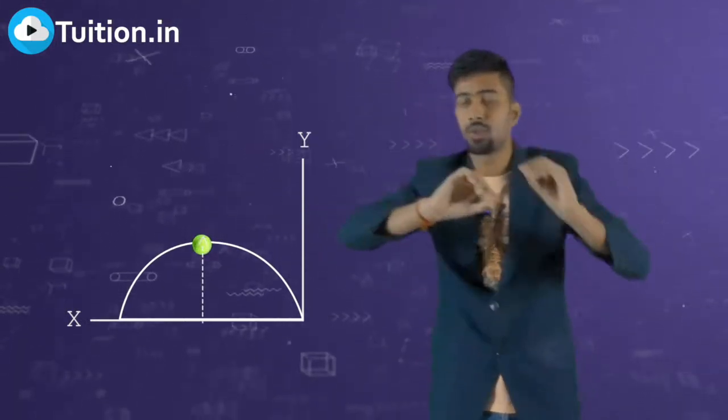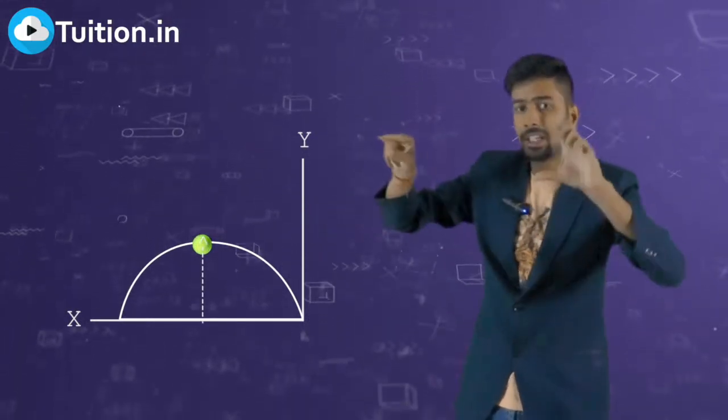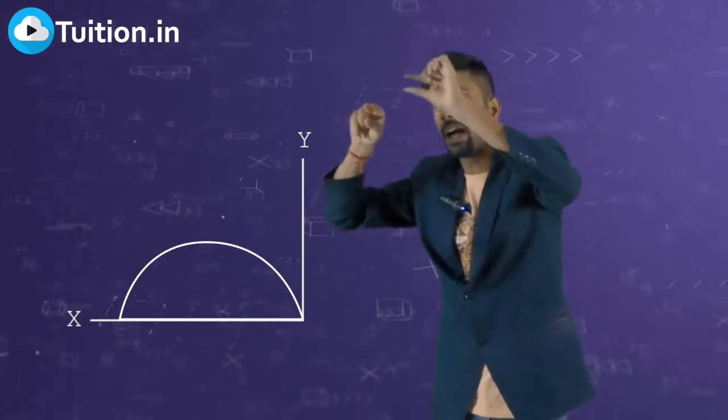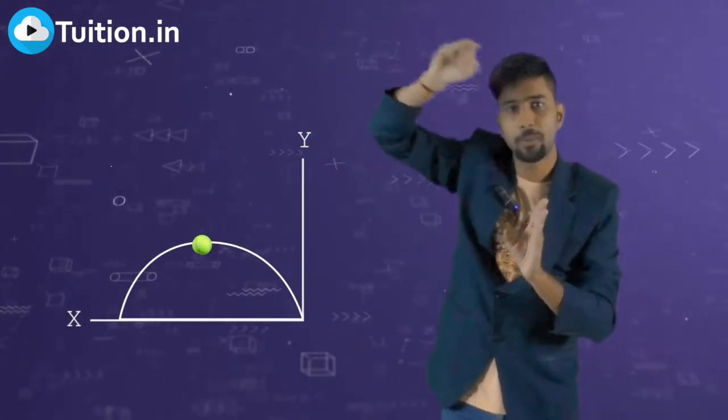But the X velocity has not changed. So what happens is, the X velocity and the reducing Y velocity add up together to give this parabolic path. So this is half of your parabola.